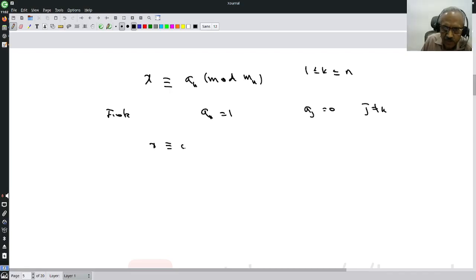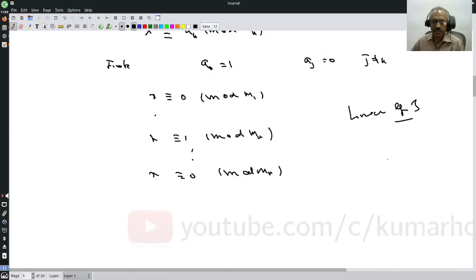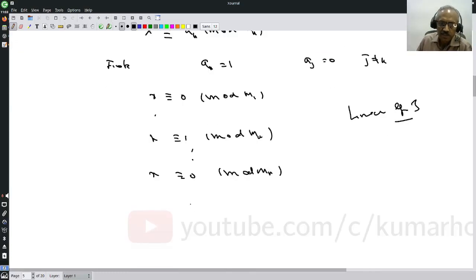Look at linear equations - these are the simplest thing. By whatever we did, there is a solution - call it x1, which has this property: x1 is congruent to 1 mod m1 and congruent to 0 mod mj, j greater than or equal to 2. Similarly for xk.